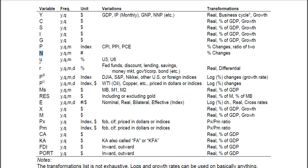U is the unemployment rate, which also comes out monthly as well as yearly and quarterly. This is a percentage. The U.S. has U-3, which is a narrower or lower rate, and U-6, which includes underemployment and some marginally attached workers. R is the interest rate, which can also be daily as well as yearly, quarterly, and monthly. This is usually a percentage rate.